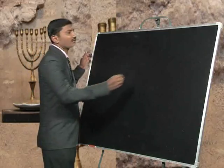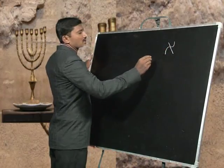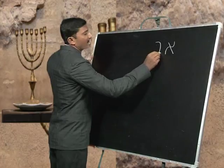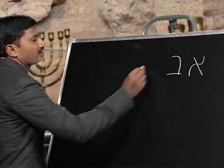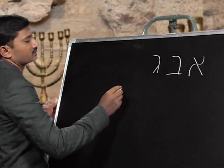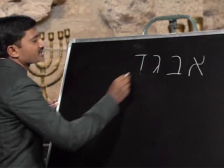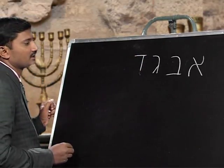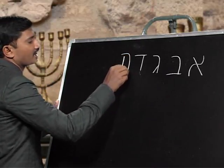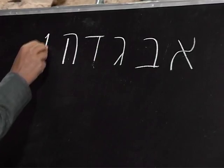The very first letter that we learned is Aleph. The second one we learned is Beith. The third letter we learned is Gimel. Then we learned the fourth letter, which is Dalet. Then we learned the letter He, and then we learned the letter Vav.